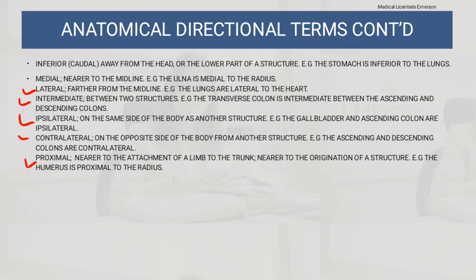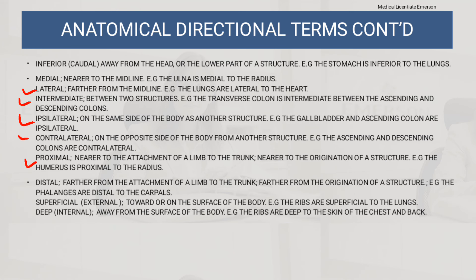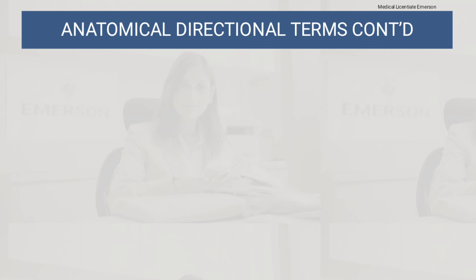Proximal means nearer to the attachment of a limb to the trunk or nearer to the origination of a structure — e.g., the humerus is proximal to the radius. Distal means further from the attachment of a limb to the trunk — e.g., the phalanges are distal to the carpals. Superficial (external) means toward or on the surface of the body — e.g., the ribs are superficial to the lungs. Deep (internal) means away from the surface of the body — e.g., the ribs are deep to the skin of the chest and back.